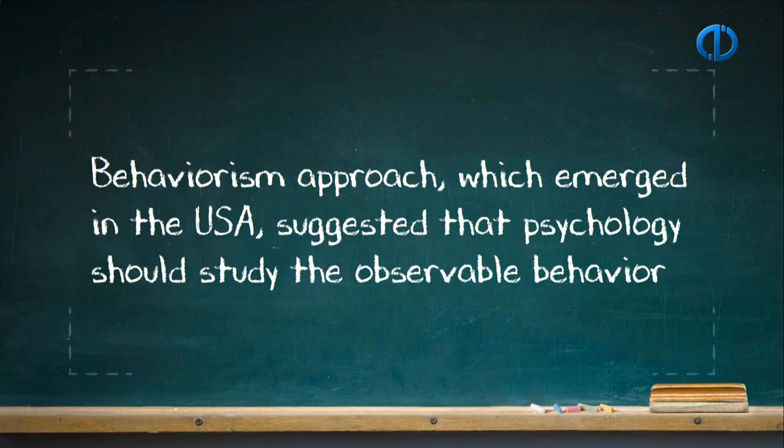Behaviorism approach, which emerged in the USA, suggested that psychology should study the observable behavior. Behaviorism was influenced by functionalism and empiricism. It emphasized the relationship between behavior and environment. It suggested that psychology should question what happens in people's environment and how they behave accordingly.